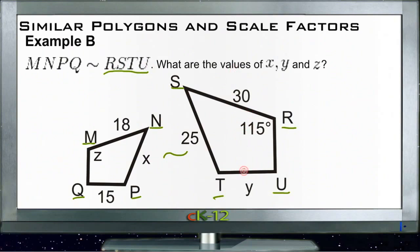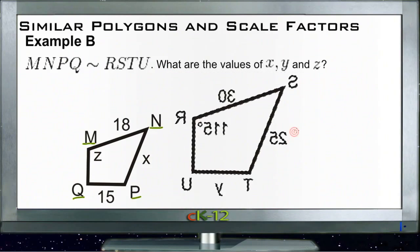So let's do that. Let me see if I can grab it and flip it here. There we go. So now we have these two things in the right sort of layout, and we know that the 30 unit side corresponds to the 18 unit side, and x, which is one of the values we're looking for, corresponds to the 25 unit side. So we can say that 30 over 18 is equal to 25 over x.